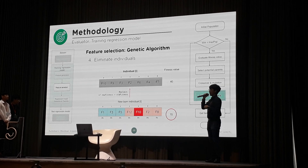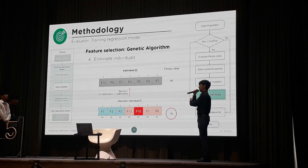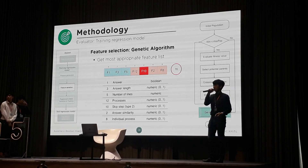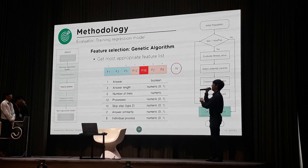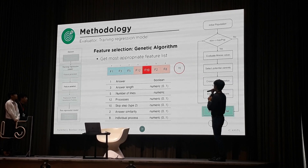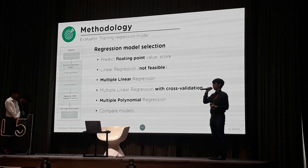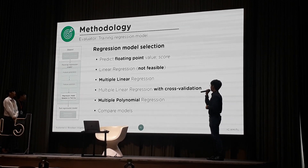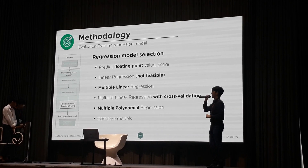If the newborn has a higher score than the previous individual, we're going to replace that individual. This gives us the new optimal feature list evaluated with the genetic algorithm — the most appropriate feature list for us. We then feed these features into the regression model. Now we're going to pass it to Mr. Peladon to explain the machine learning model that we're going to use.